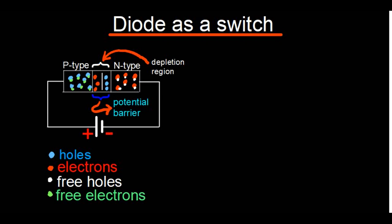We're going to look at how we can use a diode as a switch. There are two parts to this video: we'll start with the theory part, then afterwards we'll look at a demonstration. Everything discussed under the theory segment is going to manifest itself under the demonstration.